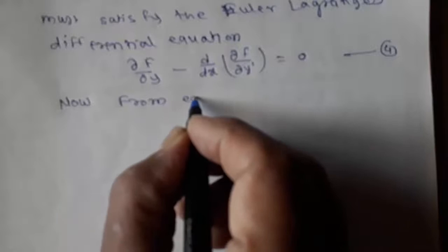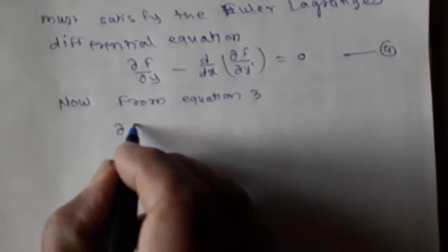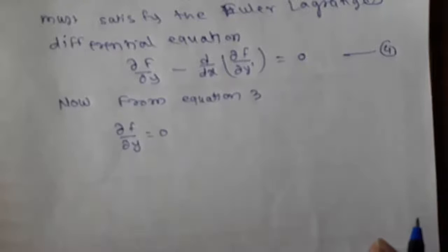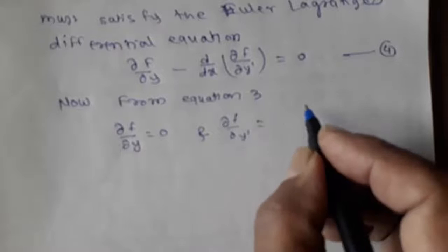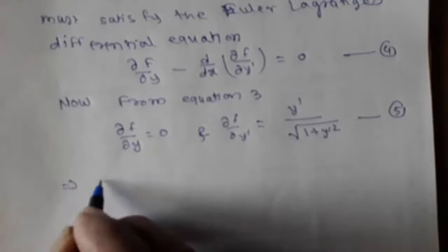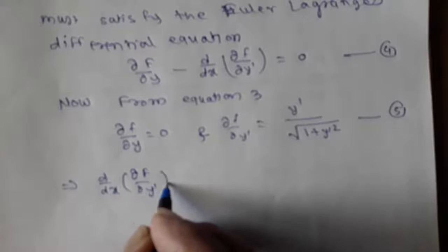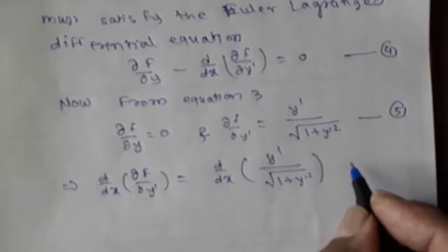From equation 3, we have ∂f/∂y = 0 because f doesn't contain the term y and hence it is constant with respect to y. And ∂f/∂y' = y' / √(1 + y'²). This implies that d/dx(∂f/∂y') = d/dx[y' / √(1 + y'²)] = 0.